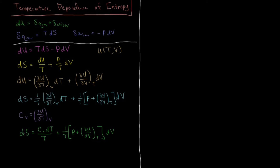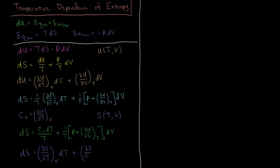If we say that entropy is a function which depends on temperature and volume, we can write the total differential of entropy as: dS = (∂S/∂T)_V dT + (∂S/∂V)_T dV. Comparing these expressions tells us how entropy depends on temperature and how it depends on volume.